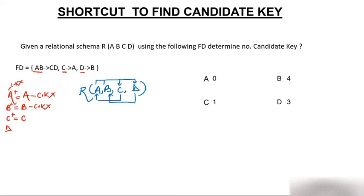Closure of D: D can determine B using D→B, giving DB. But we cannot apply AB→CD (no A) or C→A (no C), so closure of D is only DB — D is not a candidate key. So individually none of A, B, C, or D is a candidate key. We need to make pairwise combinations: AB, AC, AD, BC, BD, and DC.